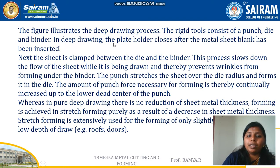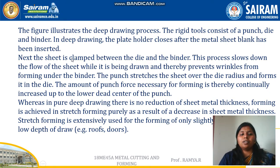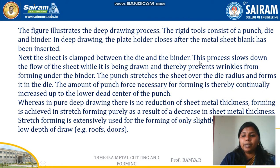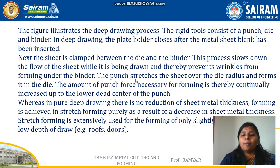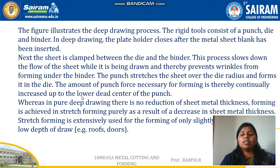In deep drawing, the plate holder closes after the sheet metal blank has been inserted. The sheet is clamped between the die and the binder. This process slows down the flow of the sheet while it is being drawn and thereby prevents wrinkles — there are no wrinkles forming under the binder. The punch stretches the sheet over the die radius and forms it into the die. The amount of punch force necessary for forming is continually increased up to the lower dead center of the punch.